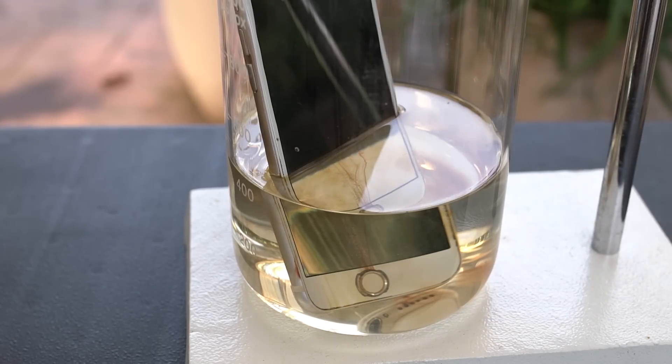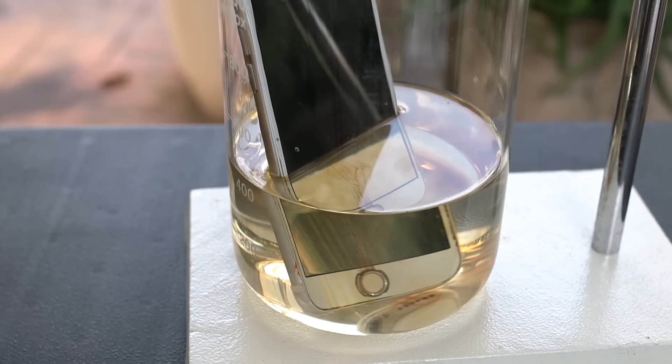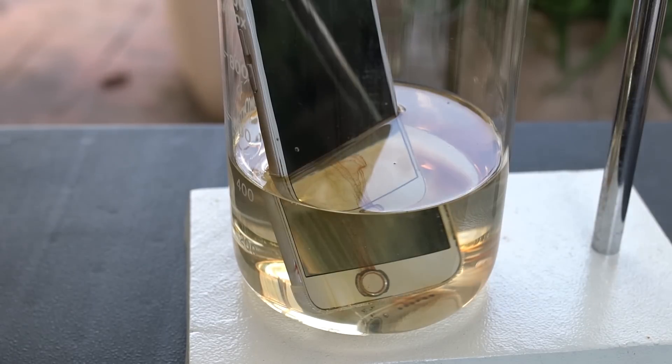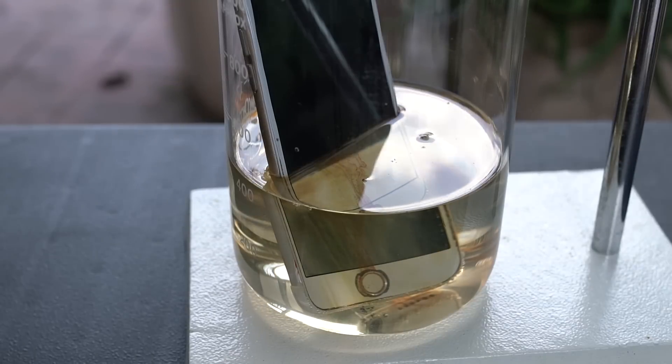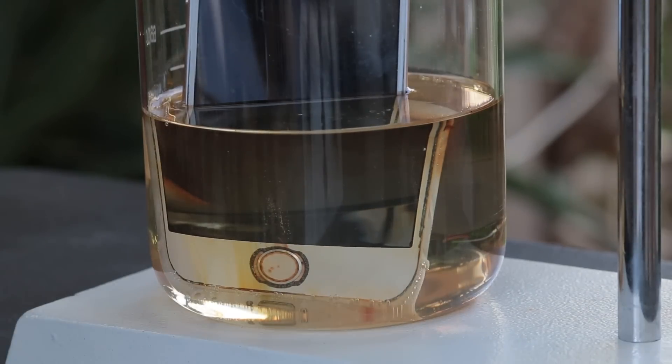At this point you can see the acid breaking away the home button and you see the blackening around the edge of the iPhone. Bubbles are starting to come out of the iPhone slowly. I assumed that the acid was breaking down the aluminum however this isn't the case, it was just air bubbles trapped in the iPhone trying to release into the acid.